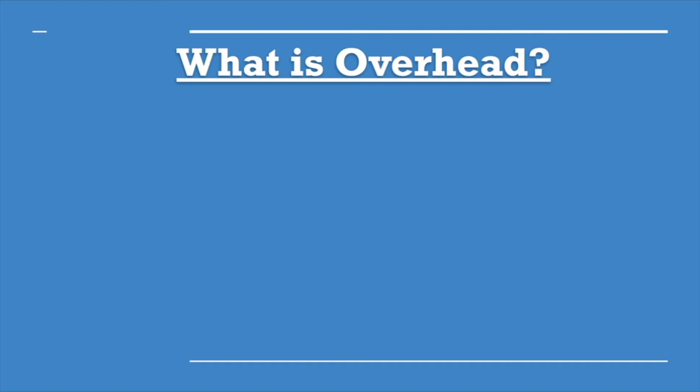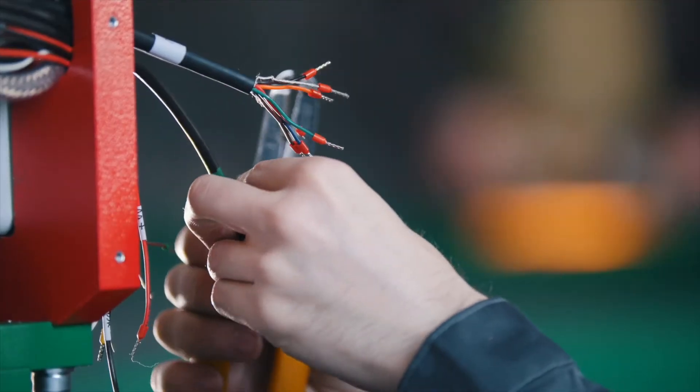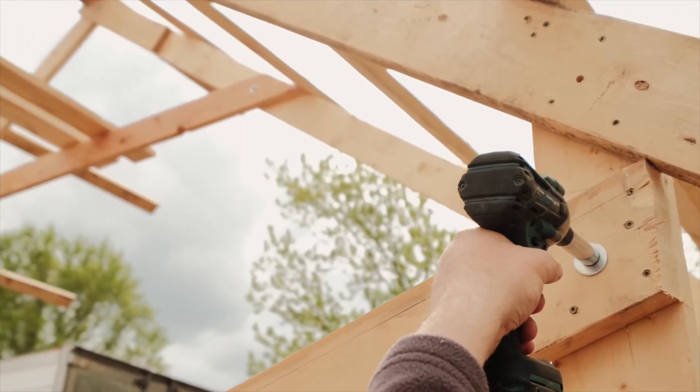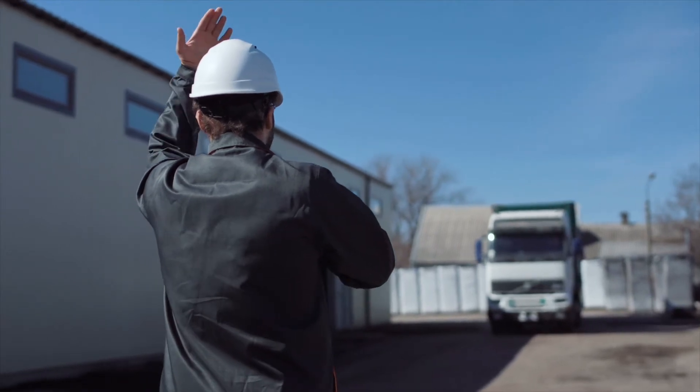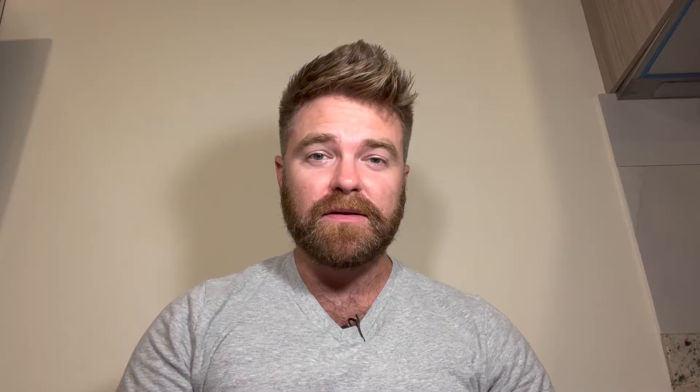What is overhead? It's a little bit different than labor and materials — it's the costs that cannot be traced, but rather applied to the build of the project based on a cost driver. Examples include electricity, indirect materials such as tools, transportation costs, fees, and insurance coverage for people and equipment. At the beginning of the project, it's very difficult to estimate how much overhead will be needed, so in job costing we calculate something called a predetermined overhead rate. To apply our overhead, we must do it in three steps.